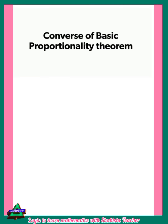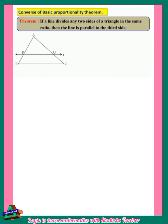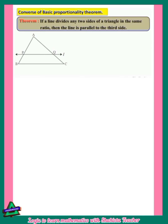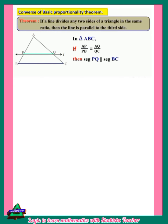After understanding the Basic Proportionality Theorem, let's now solve the Converse of the Basic Proportionality Theorem. It states: if a line divides any two sides of a triangle in the same ratio, then the line is parallel to the third side. In triangle ABC, given AP upon PB equals AQ upon QC, we have to show that PQ is parallel to BC.